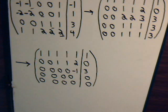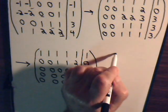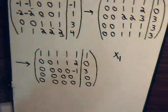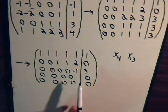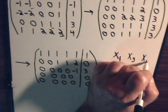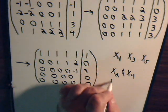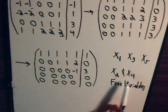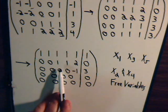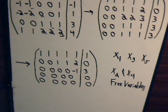But there's not going to be a unique solution. Looking at it, x1 is a lead variable, x3 is a lead variable, and x5 is a lead variable. That means x2 and x4 are free variables — they can assume any value whatsoever. As you saw in the last video, some of these lead variables will be expressed in terms of the free variables, and the free variables can assume any value at all. So therefore, you're back to having an infinite number of solutions.